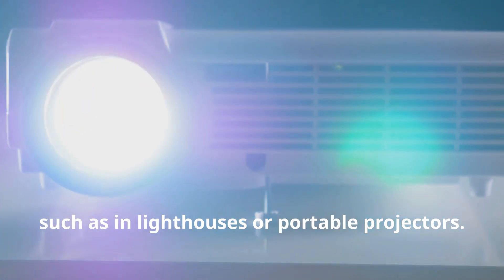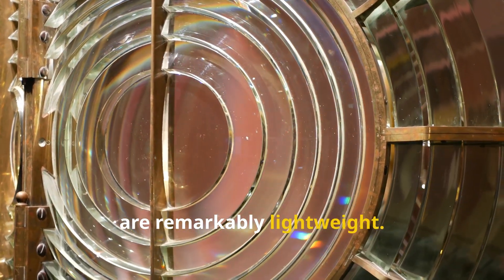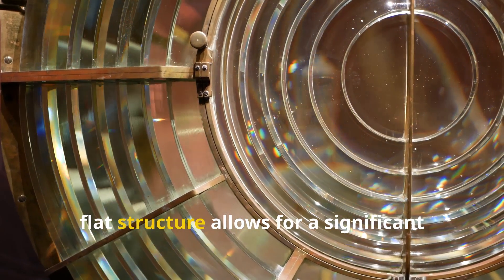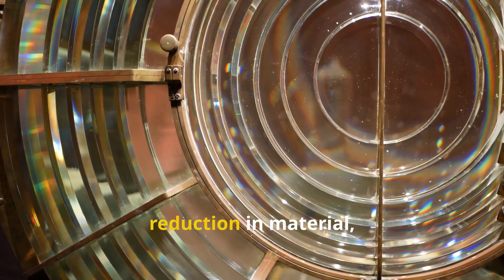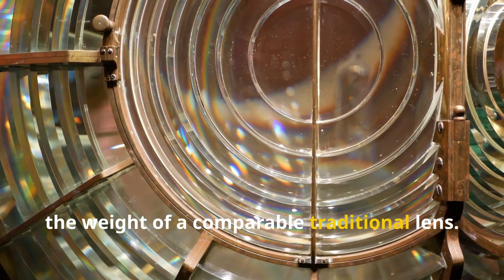Fresnel lenses, on the other hand, are remarkably lightweight. Their thin, flat structure allows for a significant reduction in material, resulting in a lens that is a fraction of the weight of a comparable traditional lens.